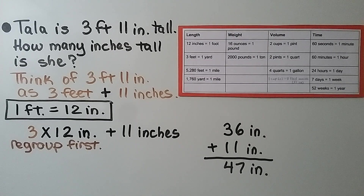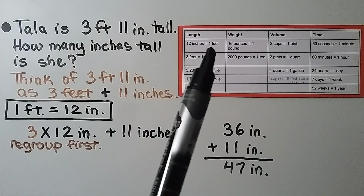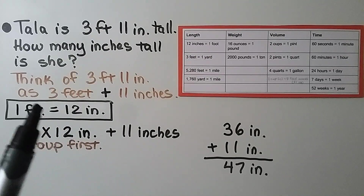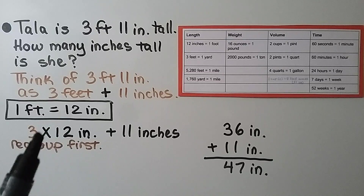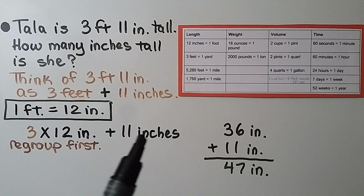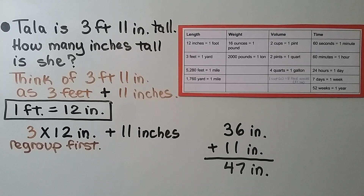Tala is three feet eleven inches tall. How many inches tall is she? We can see on our chart that twelve inches is equal to one foot. If she's three feet, then we do three times twelve, which is thirty-six inches. Then we add the other eleven inches — she's forty-seven inches tall. For this problem, we needed to change the three feet into inches and then add the eleven inches to get a total.